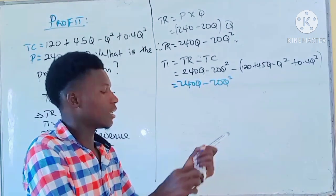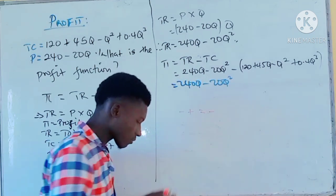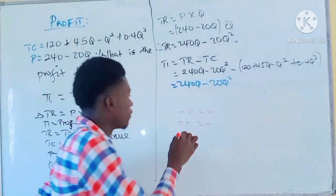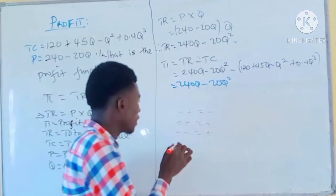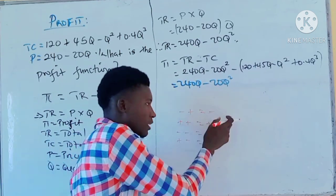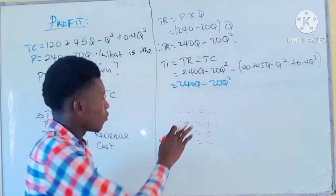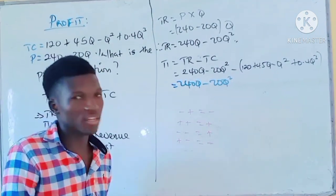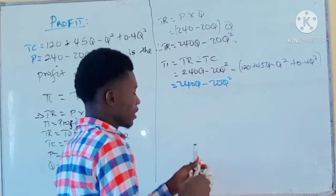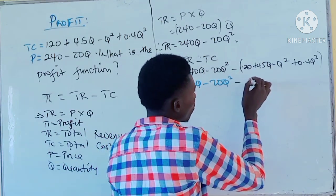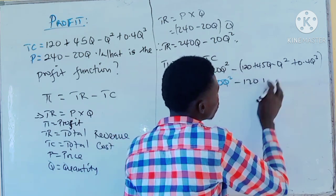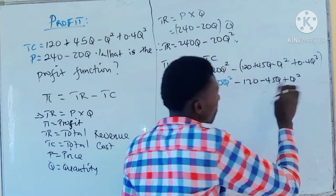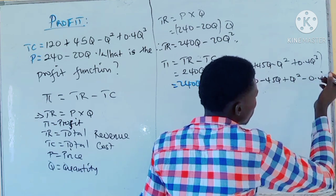Now we need to expand the bracket. The minus sign outside will hit every term inside. Remember: minus times plus gives minus, and minus times minus gives plus. So applying this rule to every term in the bracket, we get: minus 120, minus 45Q, plus Q squared, minus 0.4Q cubed.